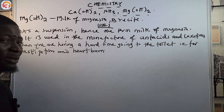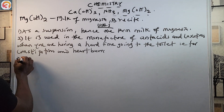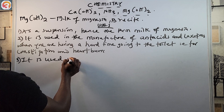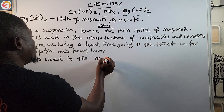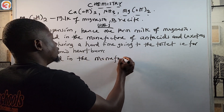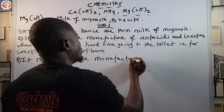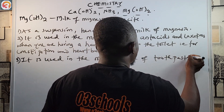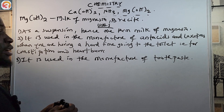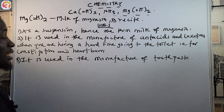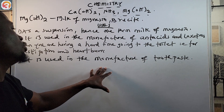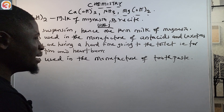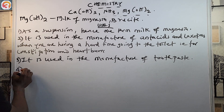Magnesium hydroxide is also used in the manufacture of toothpastes — it is a very useful component in the manufacture of toothpaste. It is also used for the partial treatment of dandruff.